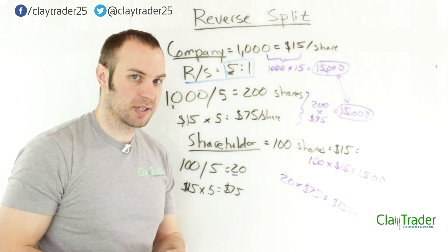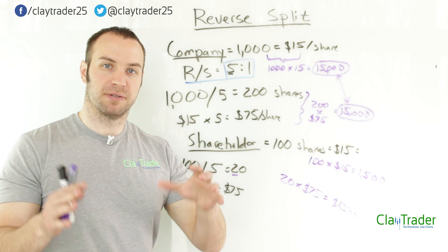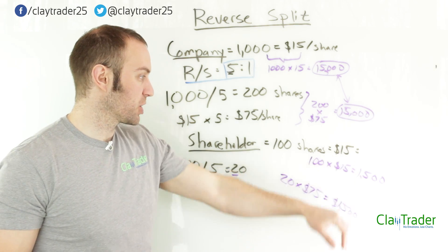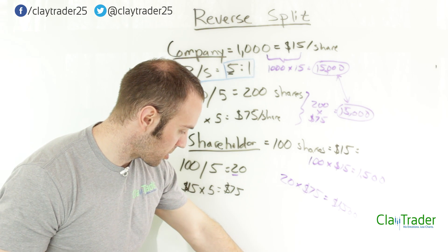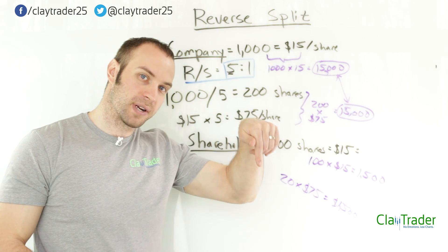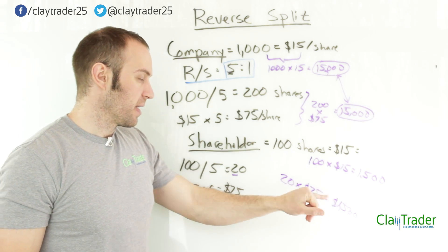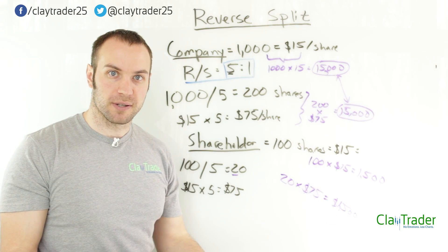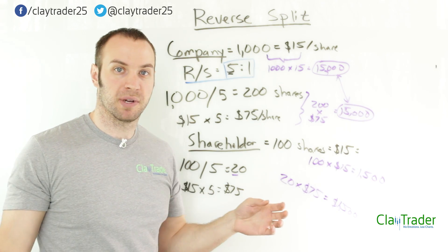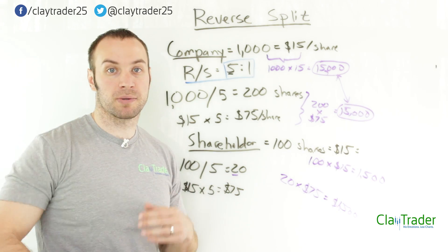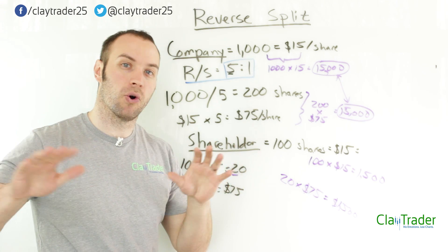The big question is: what's gonna happen to my shares? You're gonna lose shares, but as far as the value is concerned, nothing changes because it's all proportionate. The problem is if the shares start going down again and again, the company can do this again. A company can reverse split you multiple times, and then all of a sudden you're going to have like half a share left. But that's gonna take place over time.